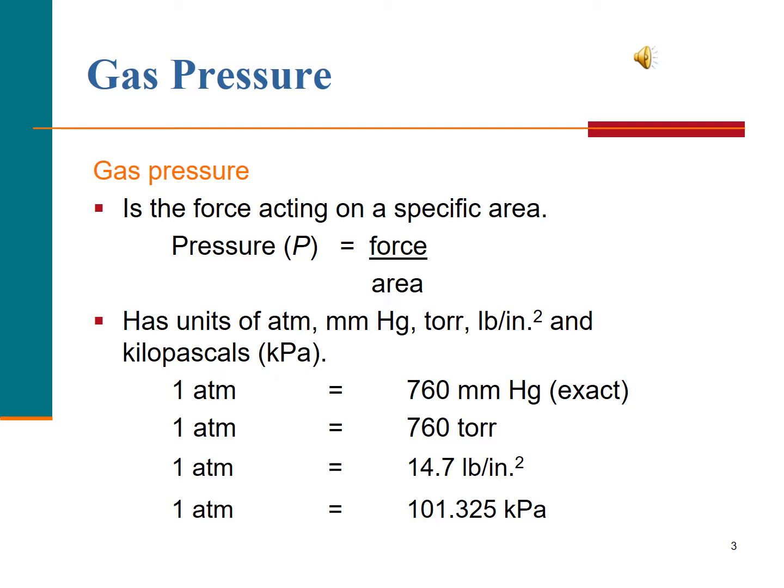Pressure is a force applied over an area. The units of pressure are an atmosphere, a millimeter of mercury — which is also called a torr. Millimeter of mercury and torr are synonyms for each other. In our everyday life, we use units of pounds per square inch, or PSI, to measure pressure — like when you check your tire pressure. Another unit of pressure is the kilopascal, which is based on SI and metric units; however, it's not one that we use commonly in the lab.